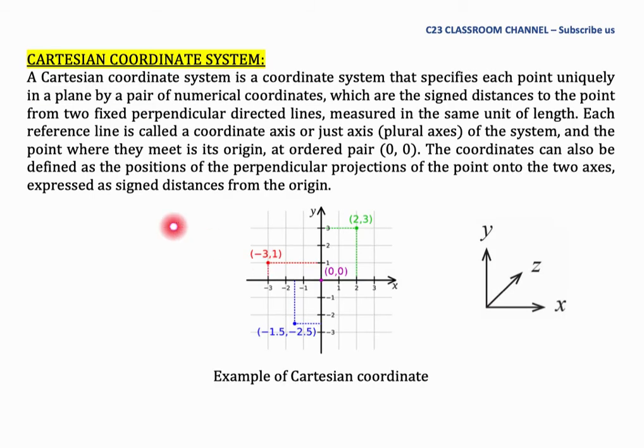This is the Cartesian coordinate. A Cartesian coordinate system is a coordinate system that specifies each point uniquely in a plane by a pair of numerical coordinates, which are the signed distances of the point from two fixed perpendicular directed lines measured in the same unit of length.